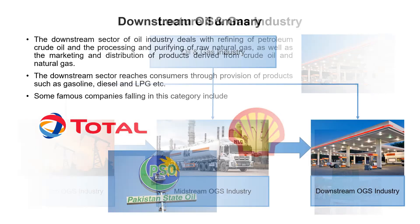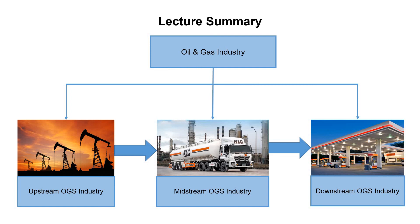In summary, the oil and gas industry is broadly divided into three sectors: upstream, midstream, and downstream. The upstream sector searches for potential hydrocarbons and brings them from the subsurface to the surface. The midstream sector provides transportation services, and the downstream sector sells these petroleum products to the end user.